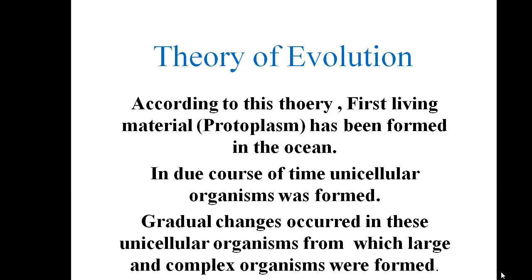What is the theory of Evolution? According to the theory of Evolution, the first living material, that is protoplasm, was formed in the ocean. In due course of time, a unicellular organism was formed. All those changes were gradual and slow. Gradually, changes occurred in unicellular organisms from which larger and more complex organisms were formed. The duration of all these changes is almost 300 crore years. Changes and development in living organisms have been all-around and multidimensional, leading to the evolution of different types of organisms.